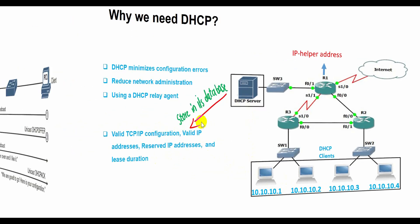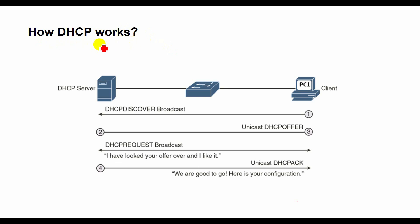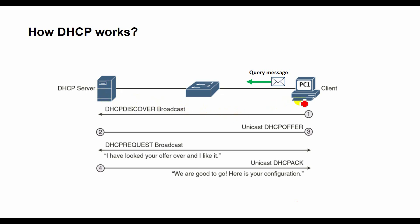DHCP allows a host to obtain an IP address dynamically when it connects to the network. A client typically broadcasts a query message for this information immediately after booting up. The DHCP server responds to the client request by providing IP configuration information from a configured range of addresses called a pool, which was previously specified by a network administrator. This includes a specific IP address and the duration of the lease. The DHCP process to lease an IP address uses four messages between the client and server.